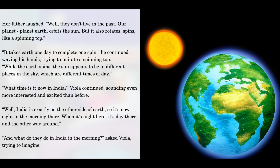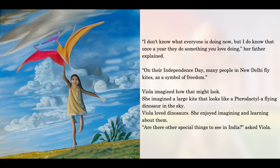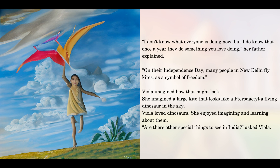Viola continued, sounding even more interested and excited than before. "Well, India is exactly on the other side of Earth, so it's now eight in the morning there. When it's night here, it's day there, and the other way around." "And what do they do in India in the morning?" asked Viola, trying to imagine. "I don't know what everyone is doing now, but I do know that once a year they do something you love doing. On their independence day, many people in New Delhi fly kites, as a symbol of freedom."